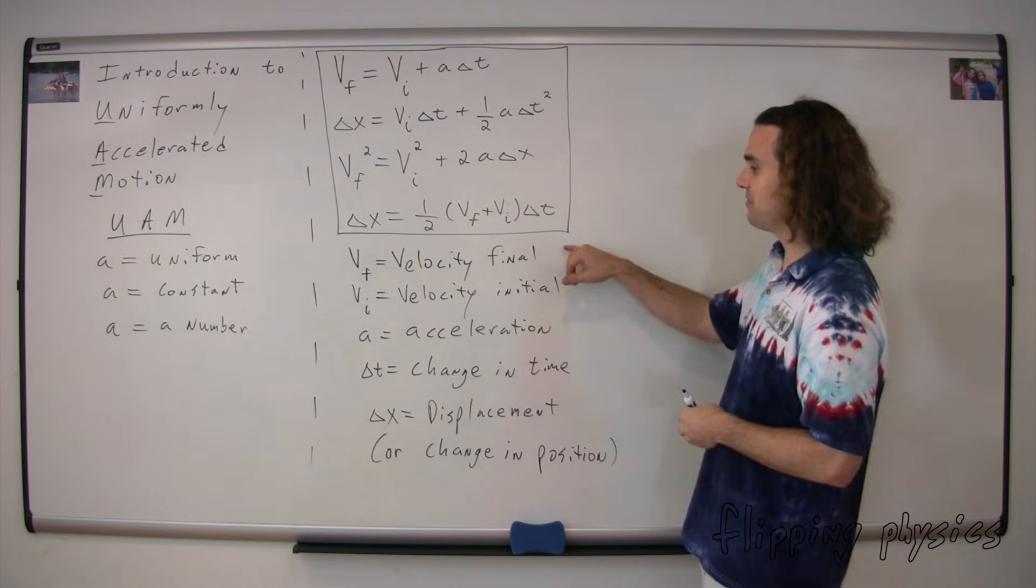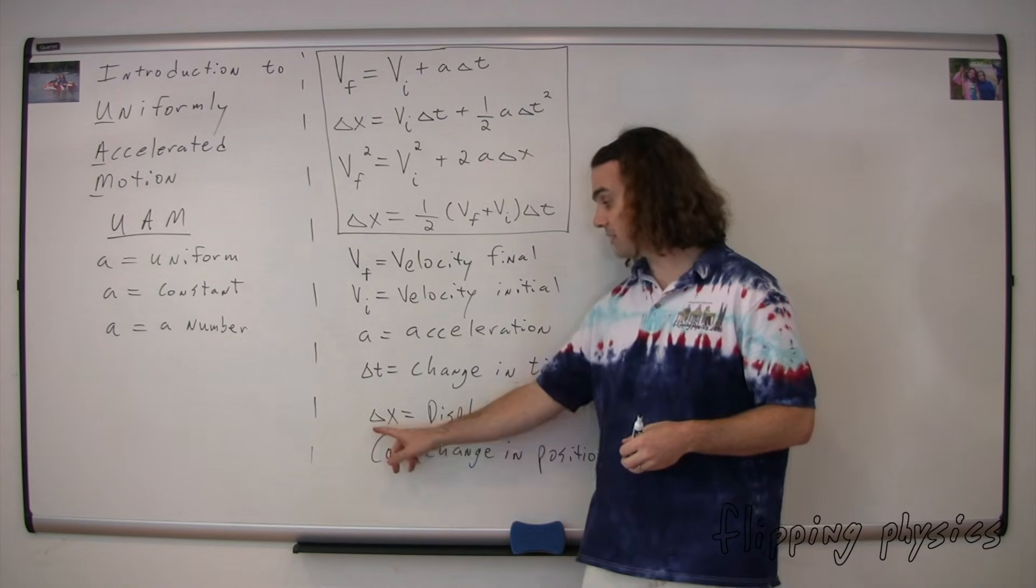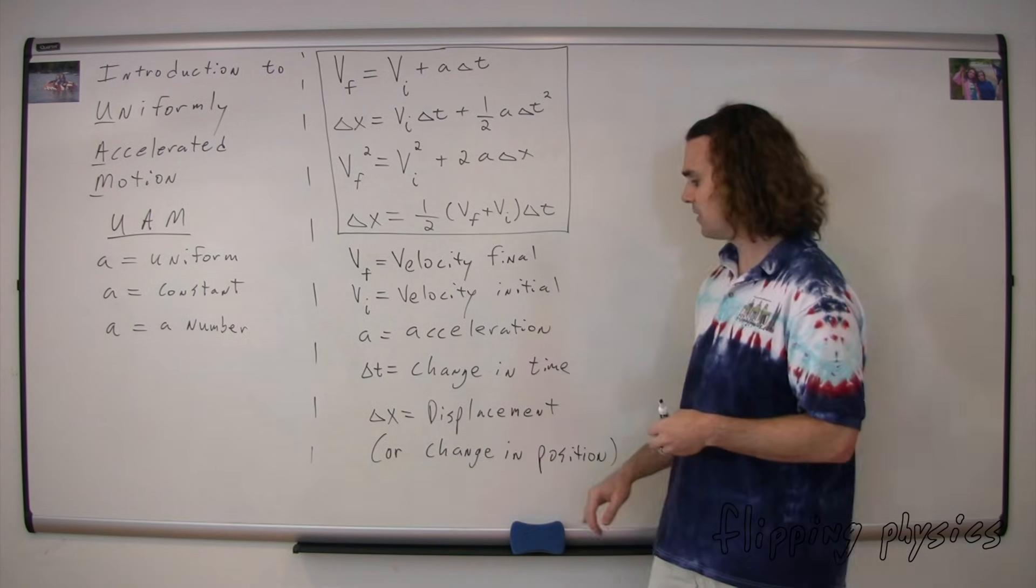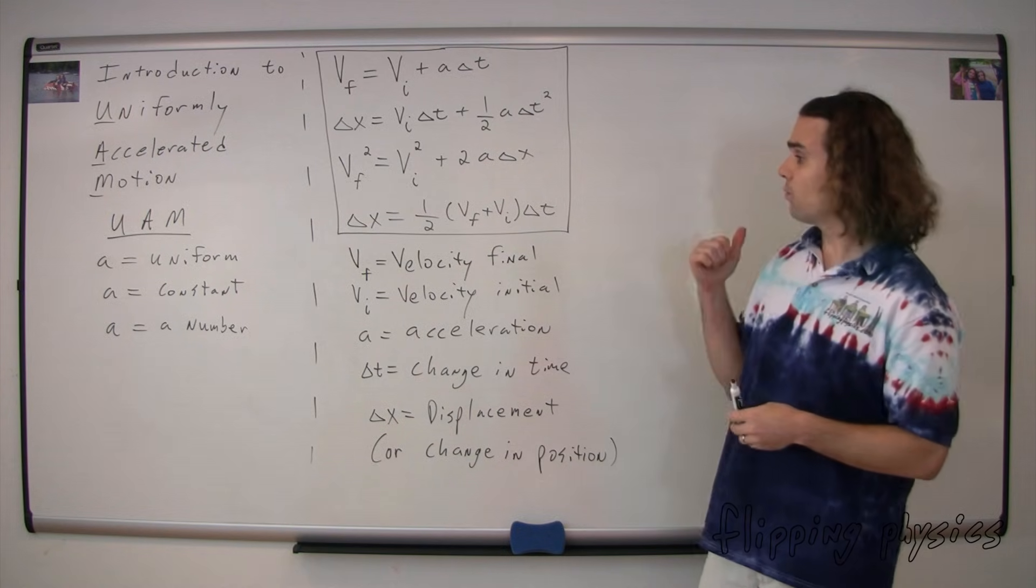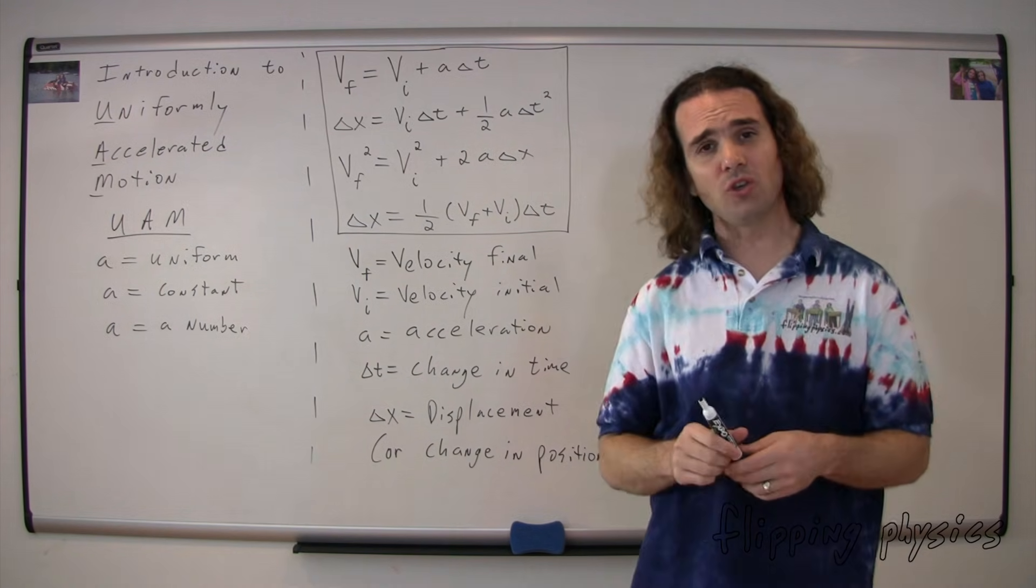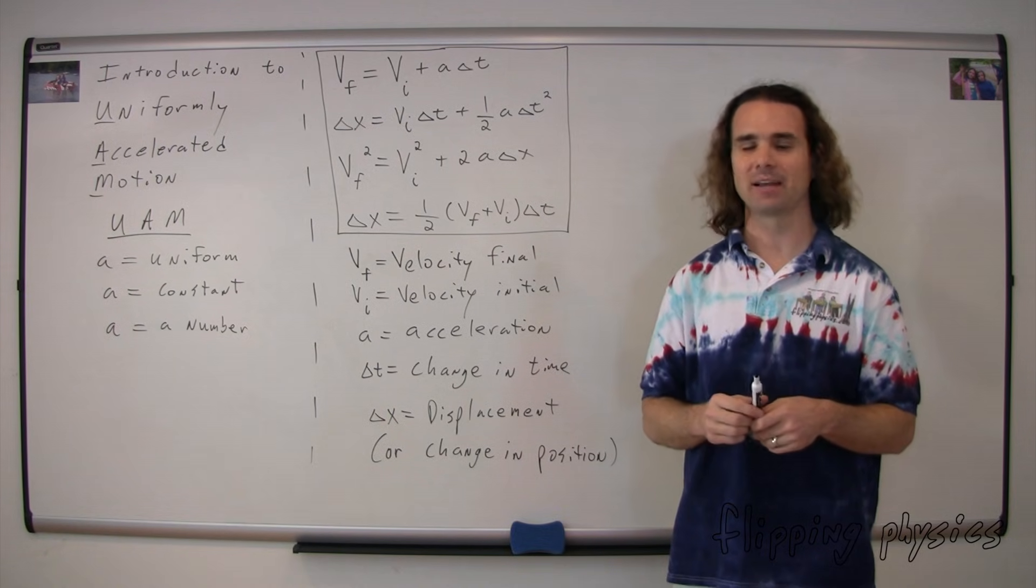Yes, the five variables are velocity final, velocity initial, acceleration, change in time, and displacement, or delta x, which means change in position because delta means change in and x means position. Now, one thing that I do suggest when you use the UAM equations is that you always use base SI dimensions or meters and seconds.